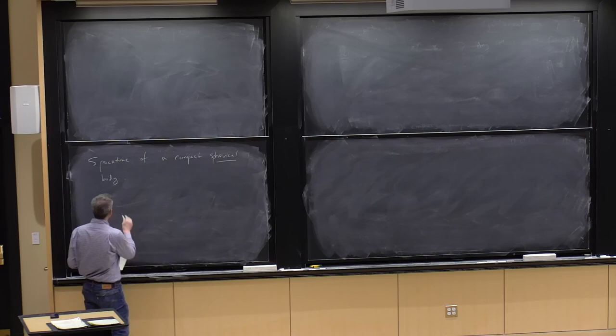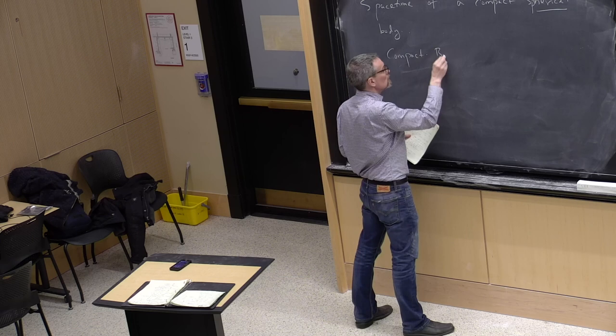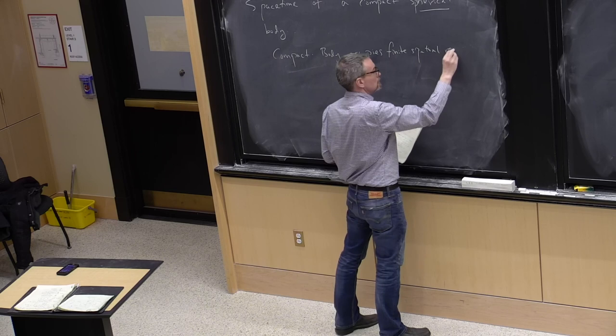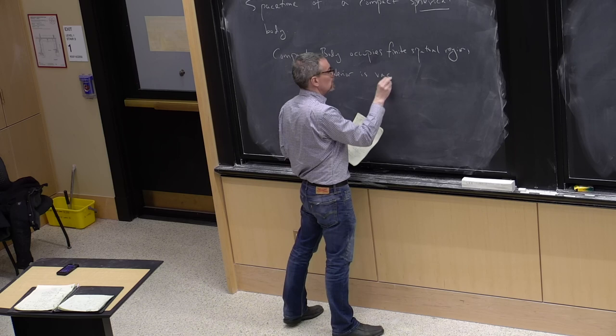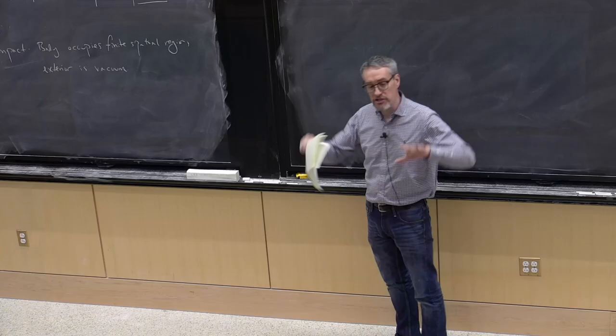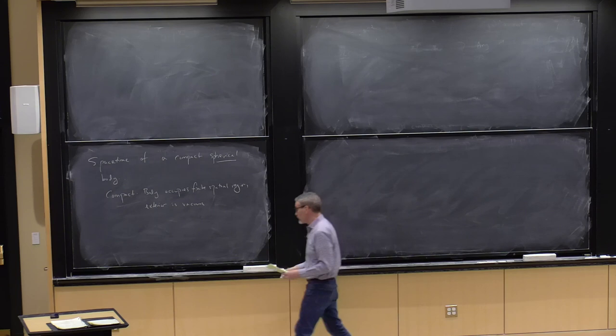What I mean by compact is that the body occupies a finite spatial region. And it has a surface with an exterior that is vacuum. So what I'm going to do is design some kind of a spacetime. I'm imagining that there is a source that fills some compact region. I'm going to make it spherically symmetric. And the exterior of the source will be T_μν equals 0.